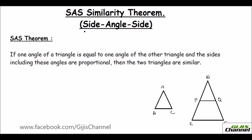It may look similar to that of the SAS congruency theorem, right? But actually here, in the congruency theorem, the sides are congruent, but in the similarity theorem, the sides are just proportional. So the SAS similarity theorem states: if one angle of a triangle is equal to one angle of another triangle and the sides including these angles are proportional, then the two triangles are similar.